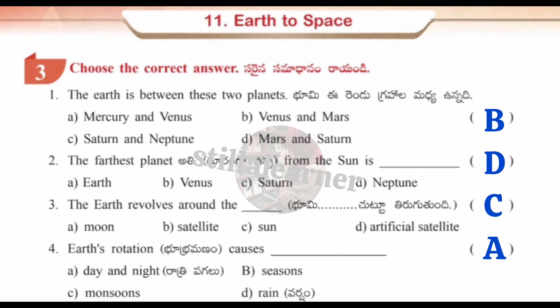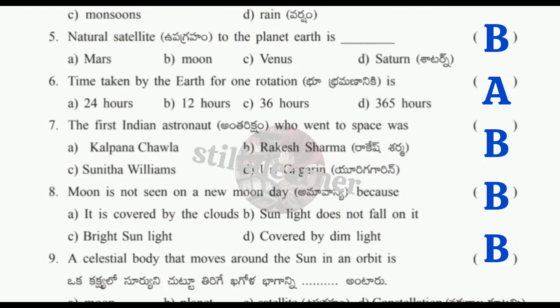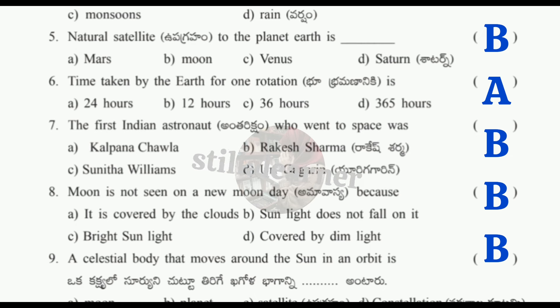Choose the correct answers: Earth is between two planets → B (Venus and Mars). The farthest planet from the sun → D (Neptune). Earth revolves around → C (Sun). Earth's rotation causes → A (Day and Night). Natural satellite of Earth → B (Moon).